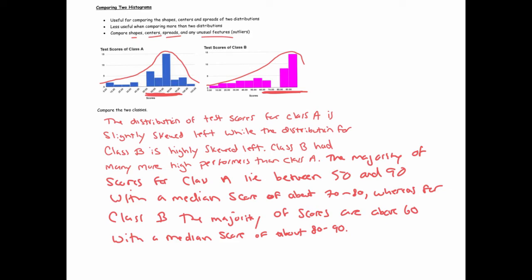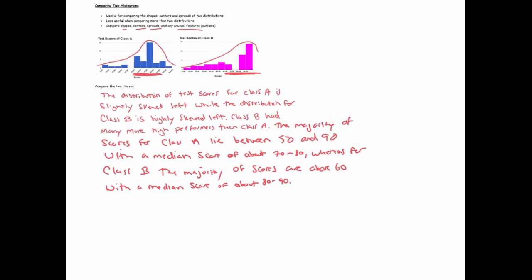In terms of unusual features, we mean outliers. And I would say we don't really know for sure because we don't have the data in front of us. It could be that the people who scored between zero and 10 for both classes are outliers. And for class A, that person who scored 105, that could be an outlier too. But we don't really know for sure. So we could at least indicate that those are possibilities. So I might say that those who scored between zero and 10 may be outliers for both classes. And the 105 for class A may be an outlier too.